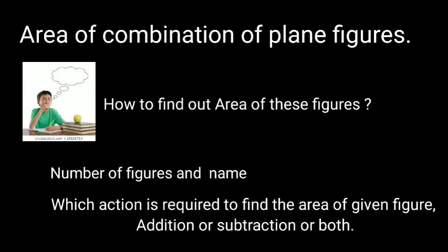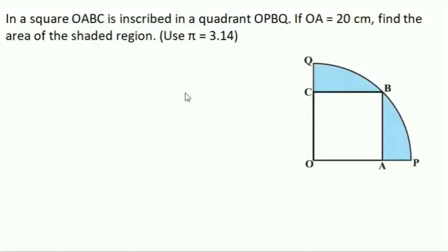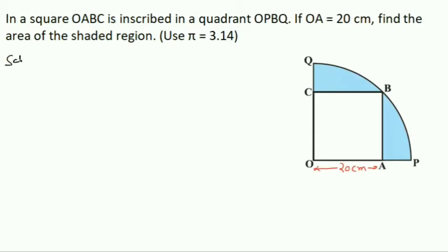Let's move to the first example. In a square OABC, a quadrant OPBQ is inscribed. If OA is equal to 20 cm, find the area of the shaded region. Use pi equal to 3.14. OABC is a square and OPBQ is a quadrant — one fourth part of the circle. OA is equal to 20 cm as given.